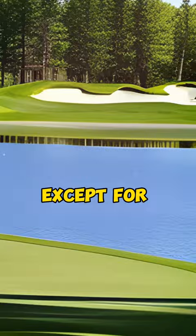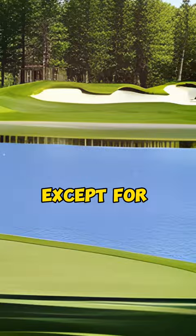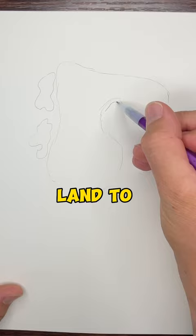It's a drivable par four over water, except for Bryson, who said it's a par three. The green sticks out on a peninsula with dry land to the left. Anything right of the green is in the water.